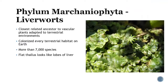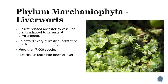The first one is phylum Marchantiophyta — the liverworts. This is probably the closest related ancestor to the vascular plants adapted to the terrestrial environment, so among the bryophytes, this is probably the most advanced. They've colonized every terrestrial habitat on Earth, which is quite fascinating given how harsh some habitats are. There are about 7,000 species. They get the name liverwort because they have this flat thallus, which is part of their gametophyte, and it kind of looks like the different lobes of the liver.